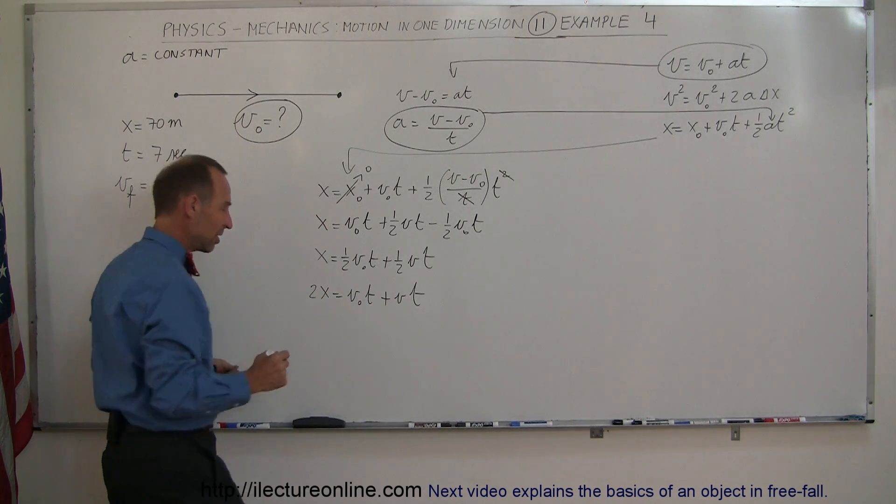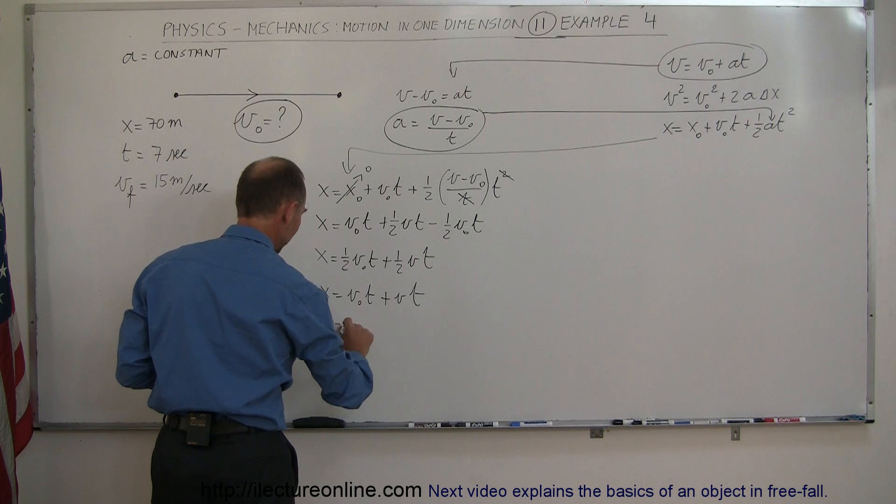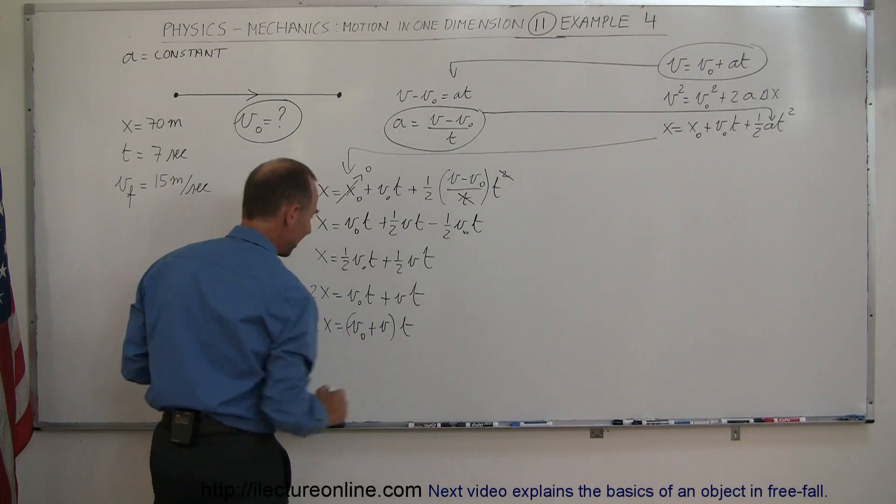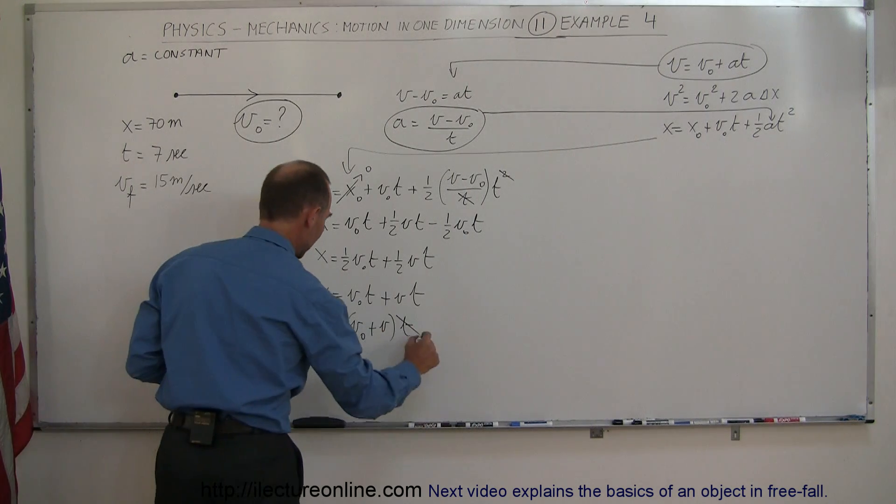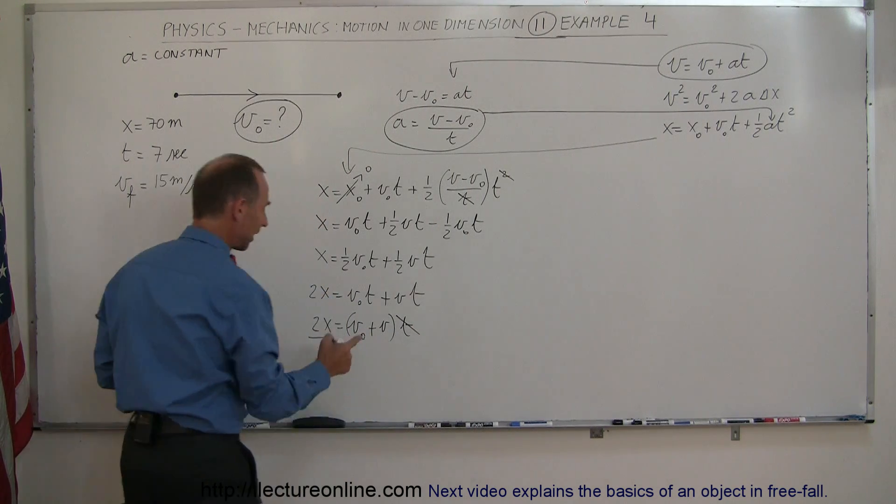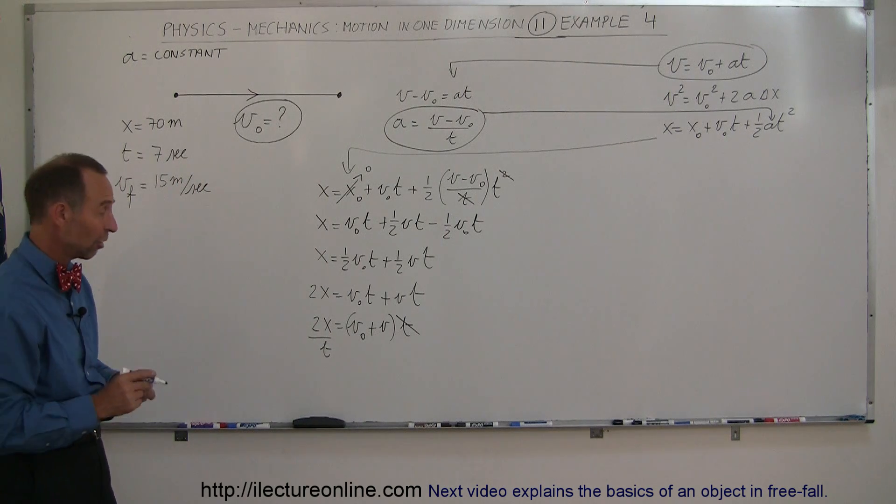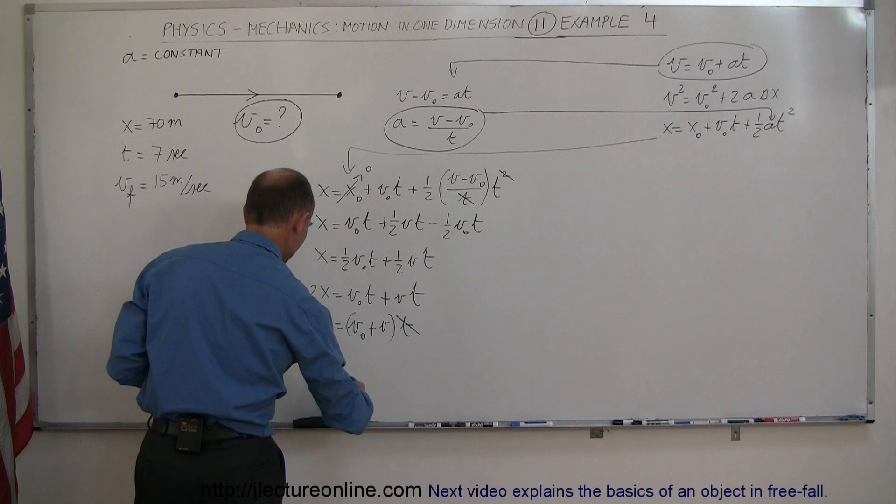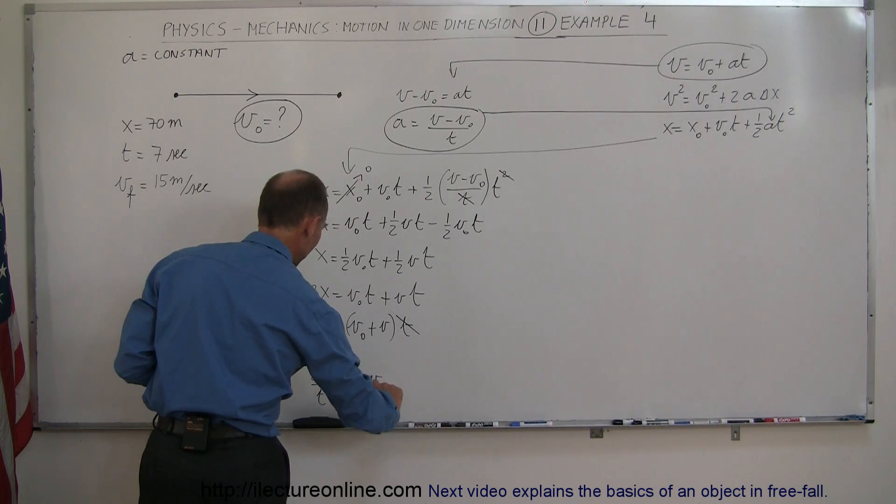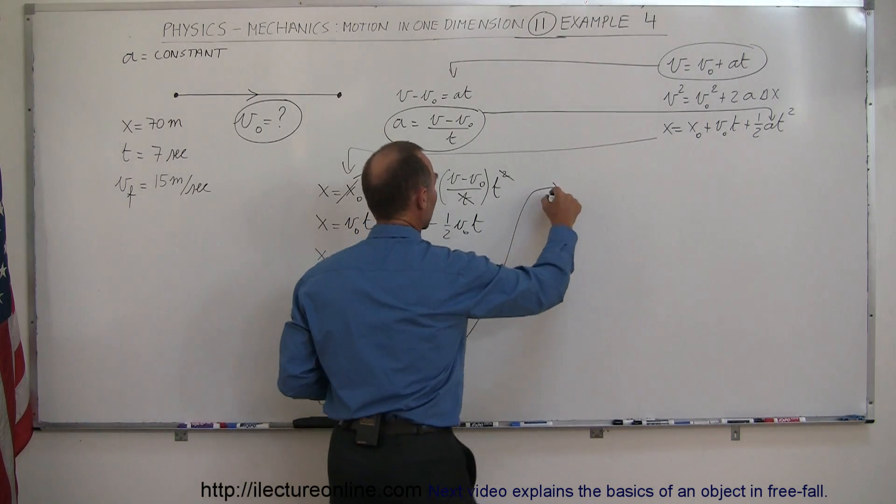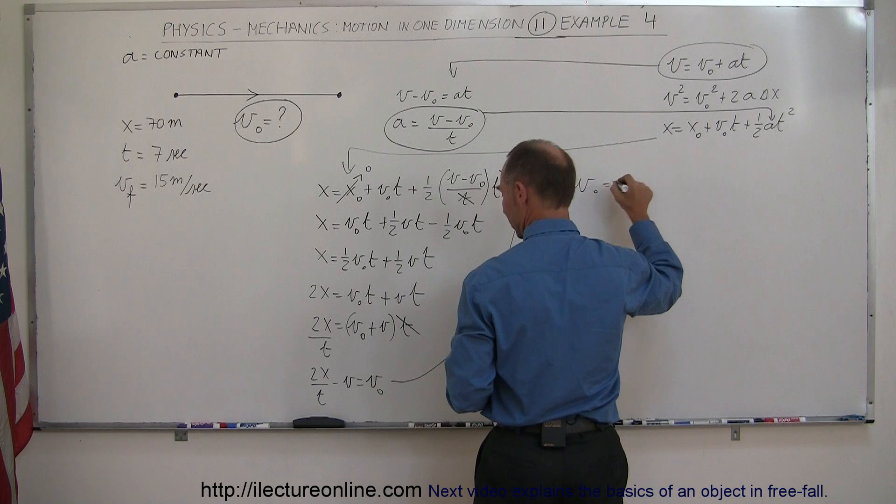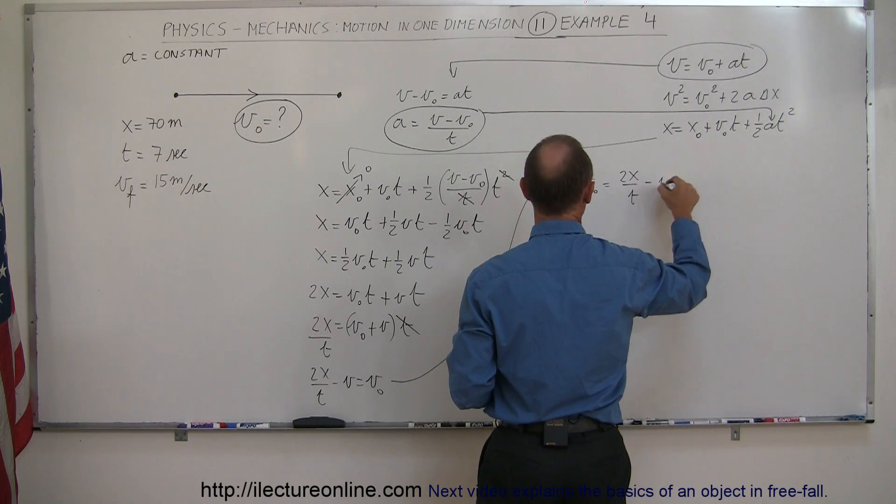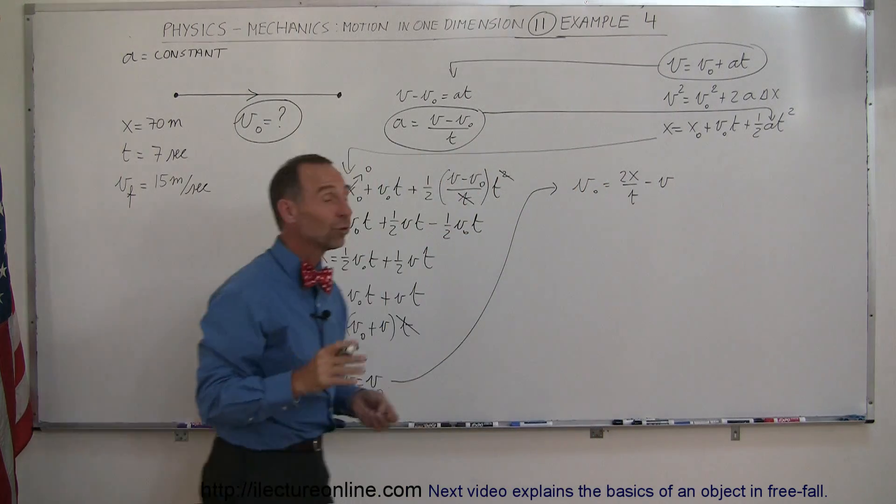Then I factor out a T, so I get 2X equals V sub naught plus V times T. I divide both sides by T, so this T can come down here. And then finally I can subtract V from that to solve for V sub naught. So I have 2X over T minus V equals V sub naught, or I can write V sub naught equals 2X over T minus V. And I know what those are.